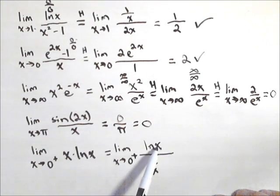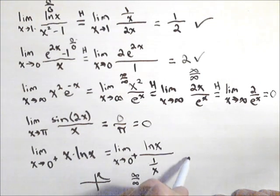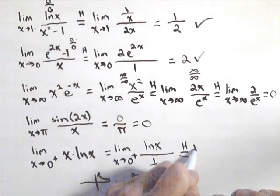This still goes to negative infinity. This guy, if you think of the graph of one over x, as x goes to zero from the right, shoots up to positive infinity. That still qualifies as an infinity over infinity case. So I can now apply L'Hopital's.